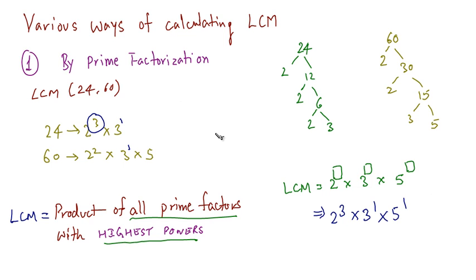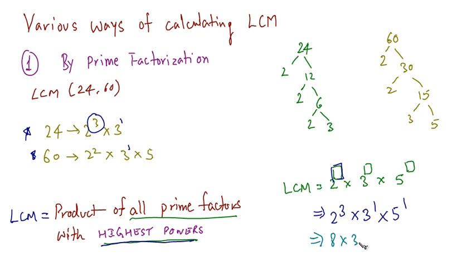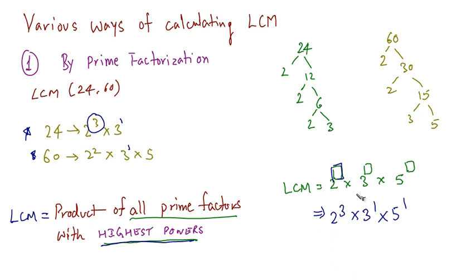Let's revise this. The first step is to find out the prime factors. Once you find them, you get the product of all prime factors — 2, 3, and 5 — and the highest powers go in these boxes. Highest power of 2 is 3, so we have 2³. For 3 it's 1, so 3¹, and for 5 it's also 1, so 5¹. Solving further: 8 × 3 × 5 gives us 120. So the LCM of 24 and 60 is 120.